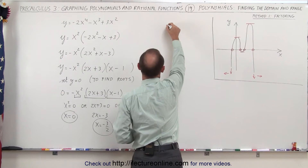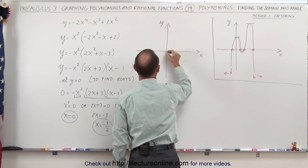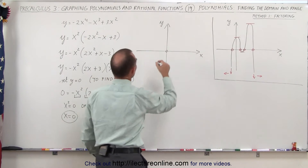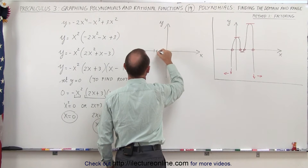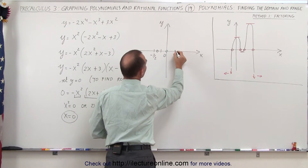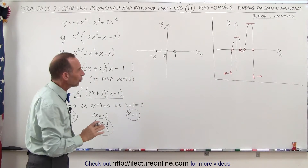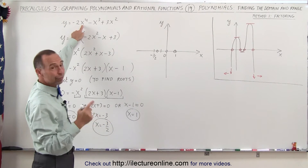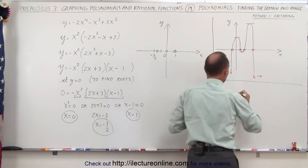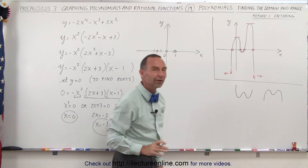Let's begin graphing. x equals 0 is right here — the graph crosses that point. x equals negative 3/2 is between negative 1 and negative 2, right here. And x equals 1 is over here. We don't quite know the full shape yet, but we know this is x to the fourth power. The general form of an x to the fourth polynomial looks either like a W or an upside-down W.